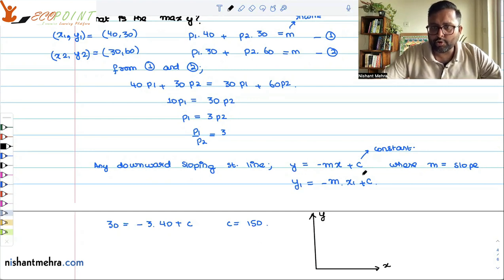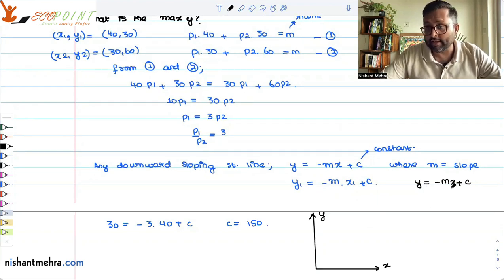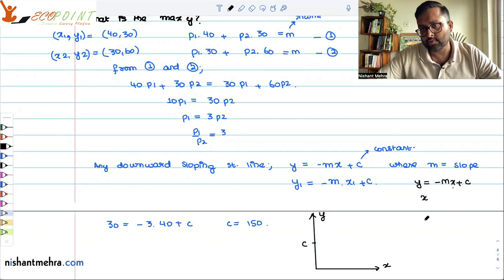You have x here, you have y here. You have y equals minus mx plus c. If x is 0, how much is y? C. Just you can write it. If y is 0, then how much is x?